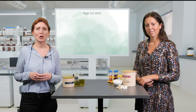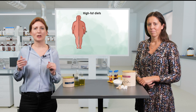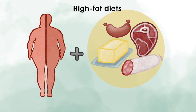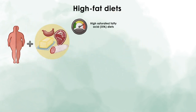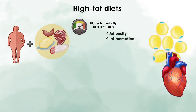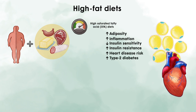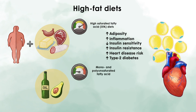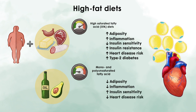An example of nutrigenomics is the link between dietary fat and the development of the metabolic syndrome. On the one hand, high fat diets — in particular high saturated fatty acid diets — have been shown to have detrimental effects on adiposity, inflammation, and insulin sensitivity, promoting the development of insulin resistance, the metabolic syndrome, and type 2 diabetes. On the other hand, fatty acids, in particular mono- and polyunsaturated fatty acids, have been shown to directly change gene expression and have protective functions towards inflammation and heart disease, and are also beneficial on insulin and glucose concentrations.